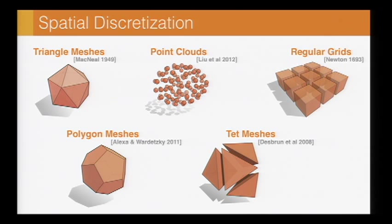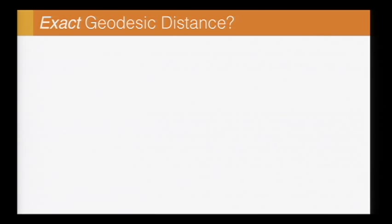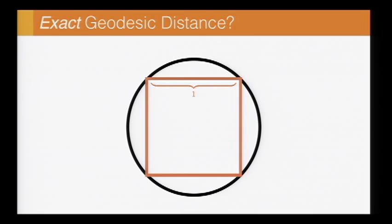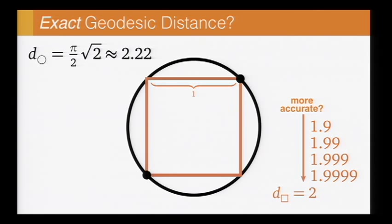A really important question when choosing a spatial discretization is how accurate is the solution relative to the exact geodesic distance? But before going further with this question, I think it's really important to understand what does the exact geodesic distance actually mean? For instance, if I have this circle, and I approximate it by this orange square with unit edge lengths, then the distance between these two points on the square is 2, but the distance along the circular arc is 2.22. And so if I have a method that gets me closer and closer to the number 2, am I really getting a more accurate solution, or am I just getting a more precise number for this rough approximation?